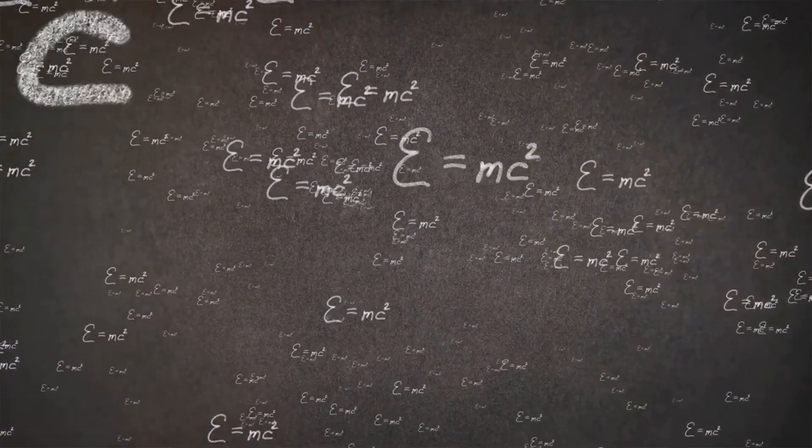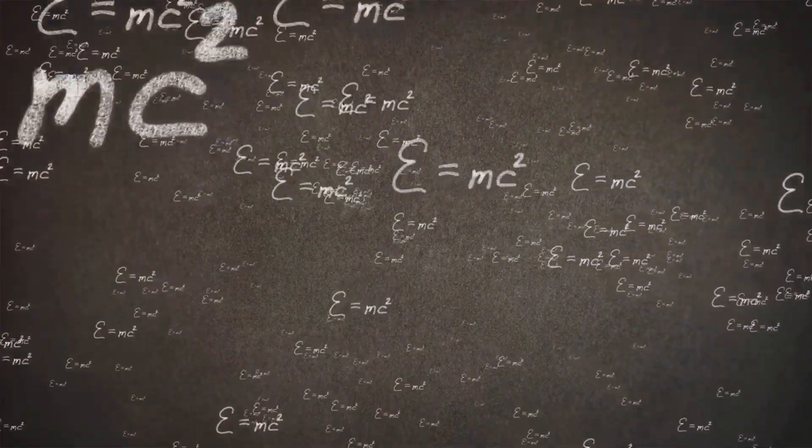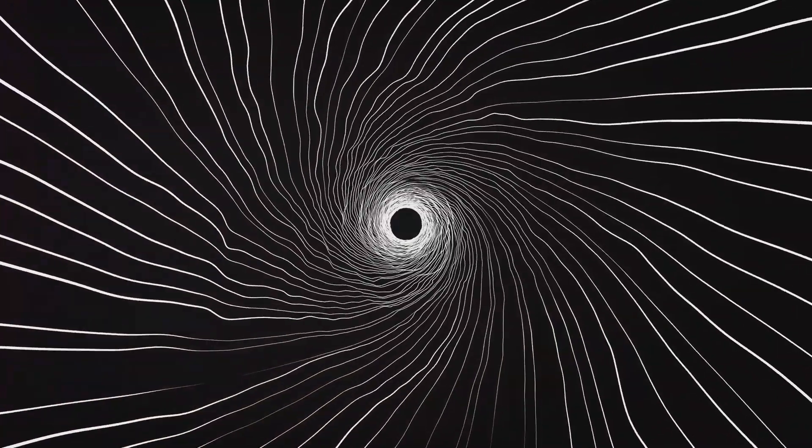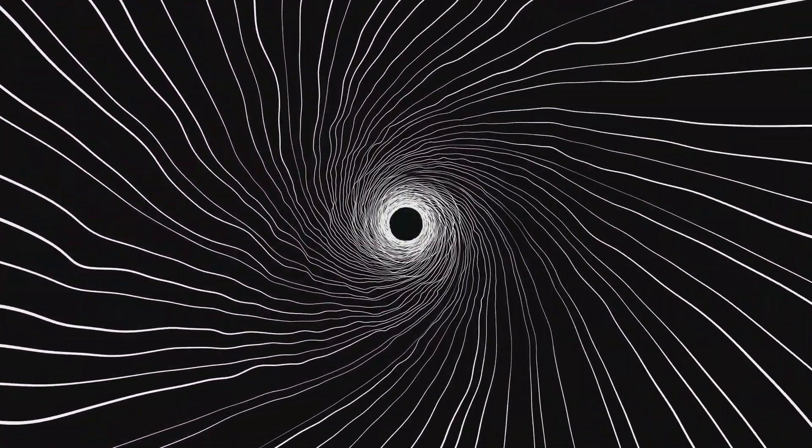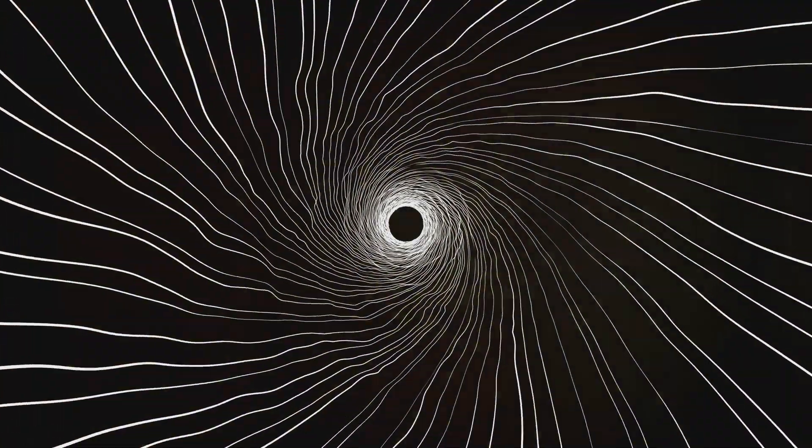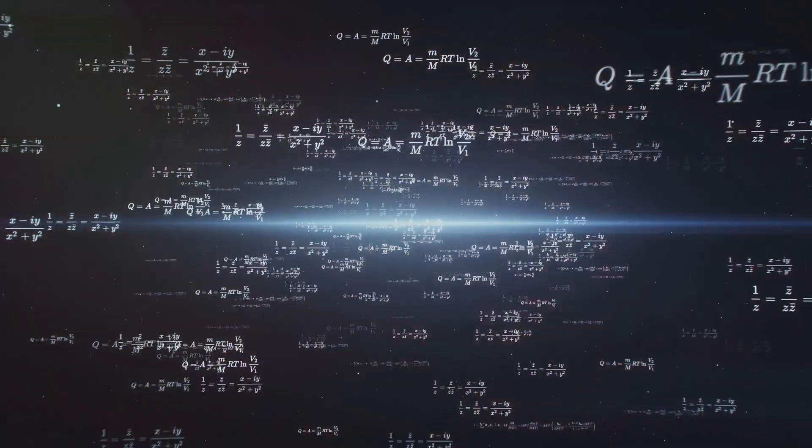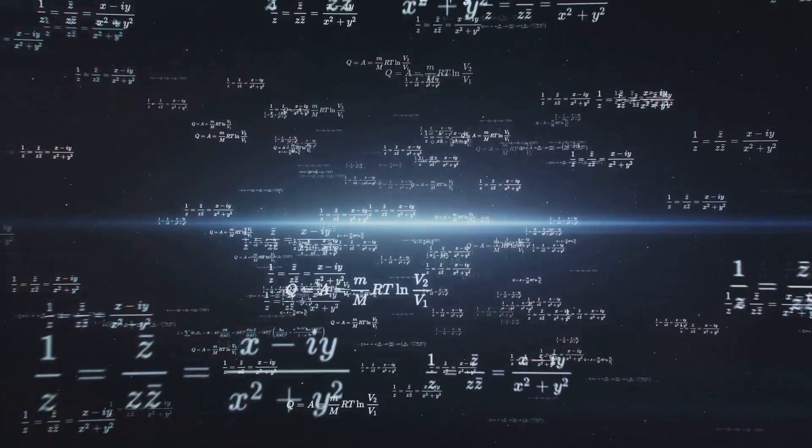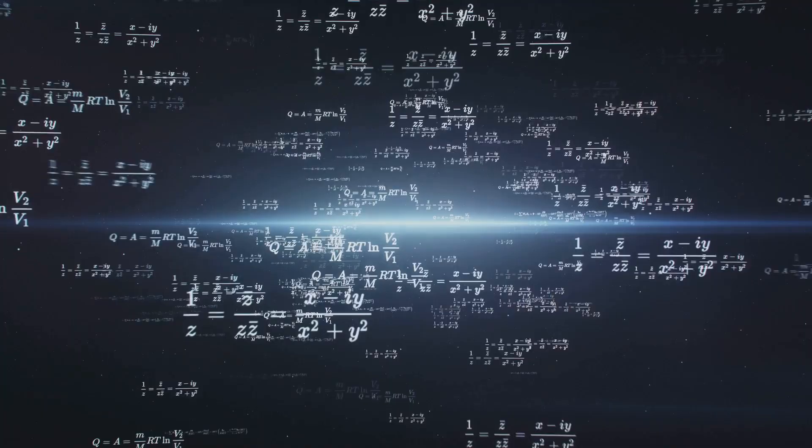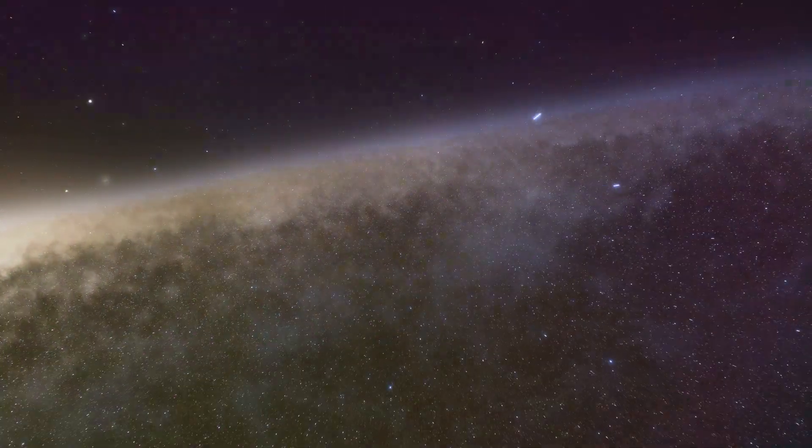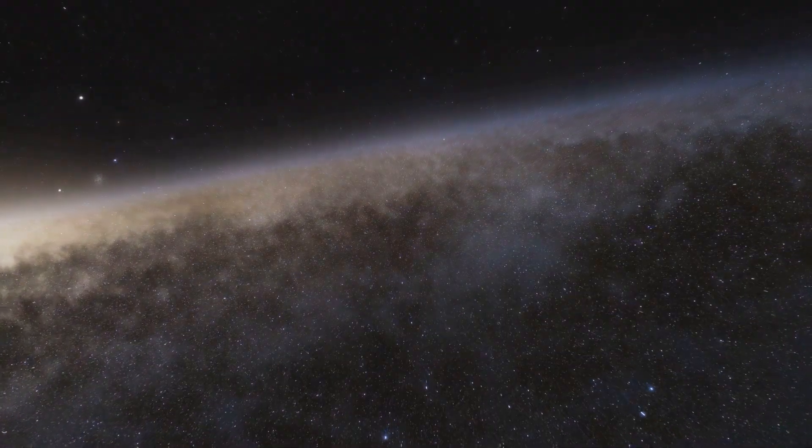Enter the Wheeler-DeWitt Equation. Now let's introduce a real game-changer, the Wheeler-DeWitt Equation. Named after physicists John Archibald Wheeler and Bryce DeWitt, this equation is like the holy grail for understanding the quantum aspects of gravity. It's a part of the quest for quantum gravity, which seeks to explain how quantum mechanics, the laws governing the very small, like particles, and general relativity, the laws governing the very large, like planets and galaxies, play together.